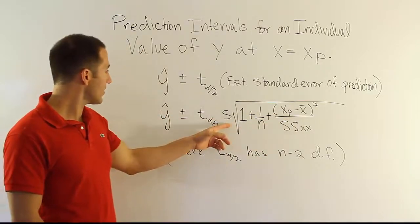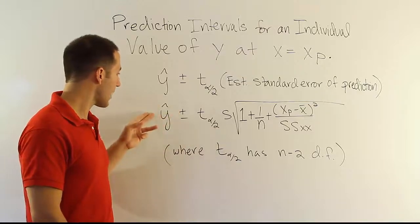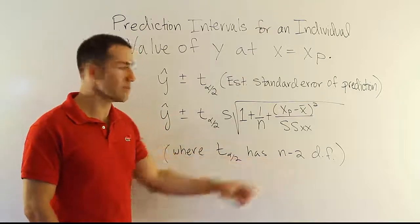Of course, you still have the s here. You have t alpha divided by 2 plus or minus y hat, and still have n minus 2 degrees of freedom.